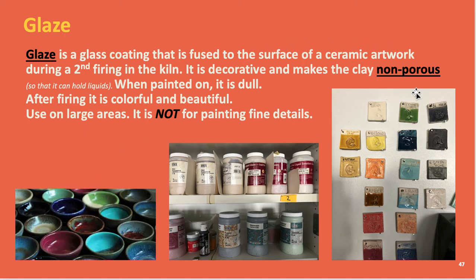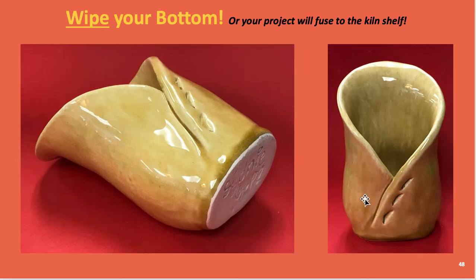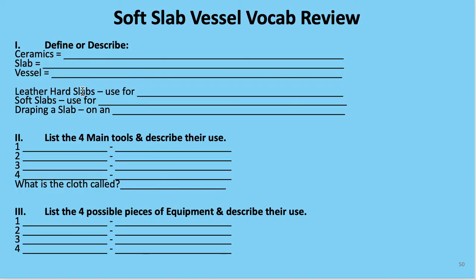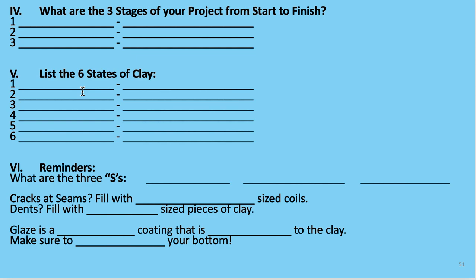Glaze is our glass coating that's non-porous. One of these projects we will be glazing — if you do glaze, remember to wipe the bottom, otherwise it will fuse to the kiln shelf and have to be removed with a hammer. Other finishing options include India ink, paint markers for fine details, acrylic paint, underglaze, and majolica glaze; if you're curious about those we can talk individually. Vocabulary is on a handout. A lot of this is review — we'll start the project after the sketchbook assignments.